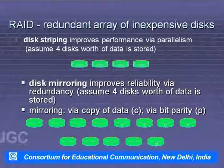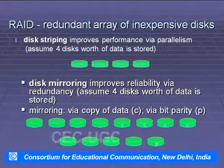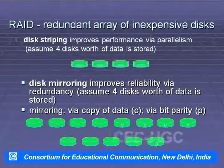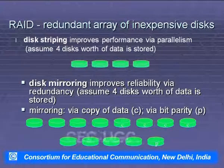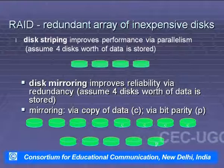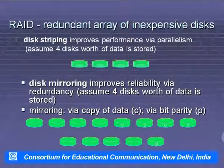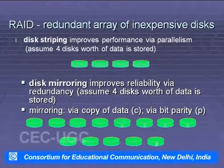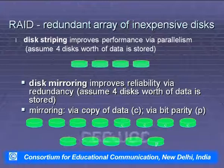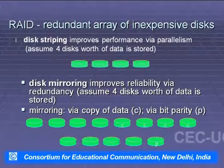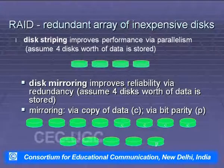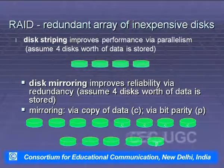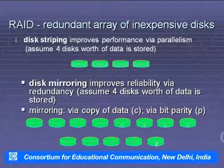RAID — Redundant Array of Inexpensive Disks: disk striping improves performance via parallelism. Assuming four disks' worth of data is stored, disk mirroring improves reliability via redundancy, with data mirrored by copy and bit parity.